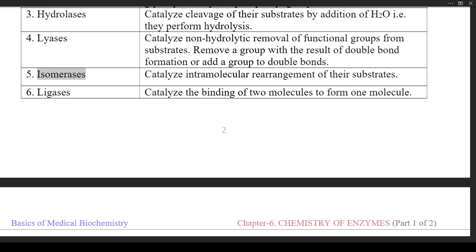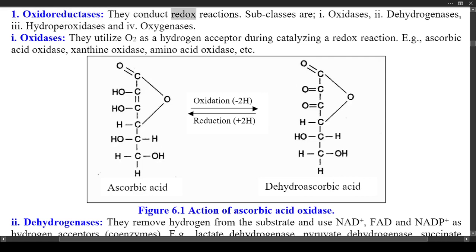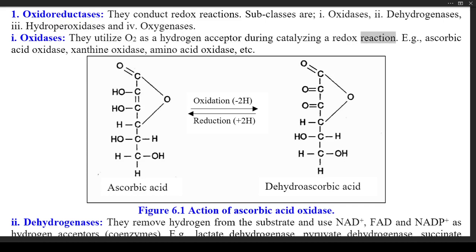(5) Isomerases — catalyze intramolecular rearrangement of their substrates. (6) Ligases — catalyze the binding of two molecules to form one molecule. Class 1: Oxidoreductases conduct redox reactions. Their subclasses are: (1) Oxidases — they utilize O₂ as a hydrogen acceptor during catalyzing a redox reaction; e.g., ascorbic acid oxidase, xanthine oxidase, amino acid oxidase, etc.